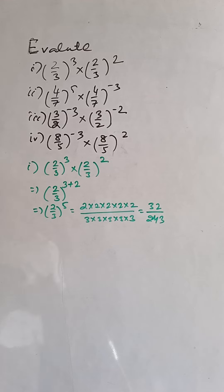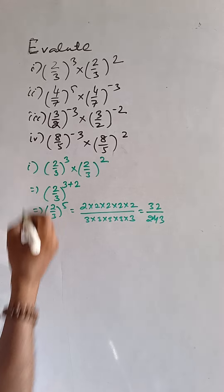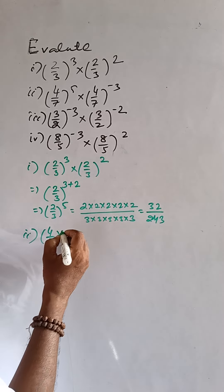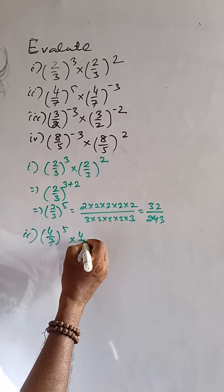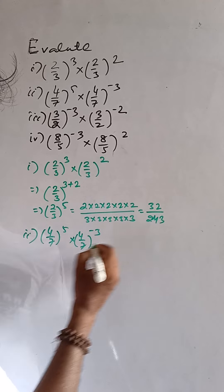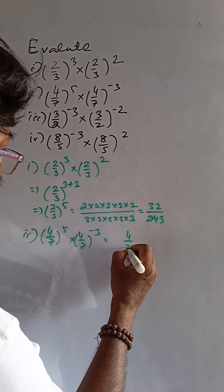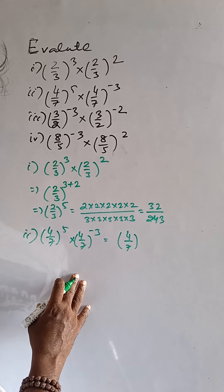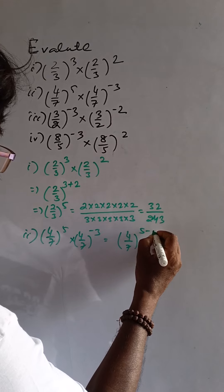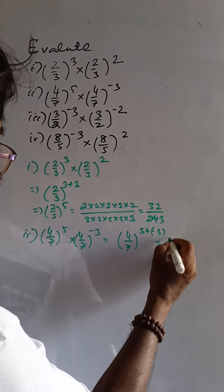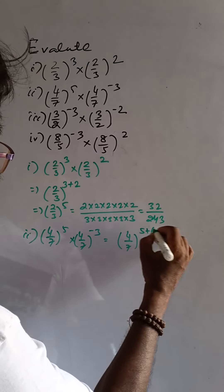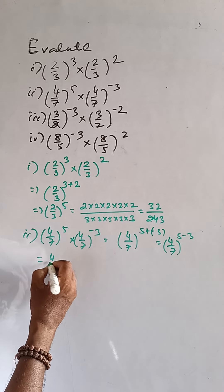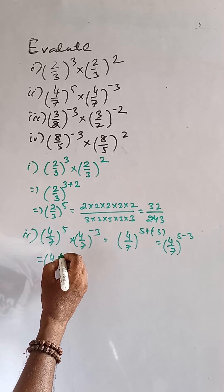In the second case, that is 4 by 7 to the power 5 into 4 by 7 to the power minus 3. Here the bases are equal, 4 by 7, and the condition is multiplication, so the powers will add up: 5 plus minus 3, that is 4 by 7 to the power 5 minus 3. Finally this is 4 by 7 to the power 2.